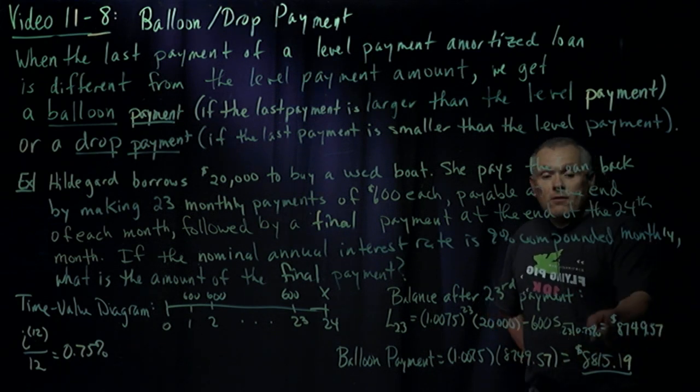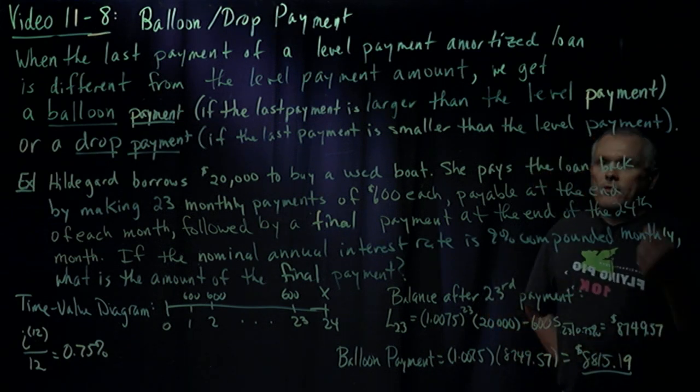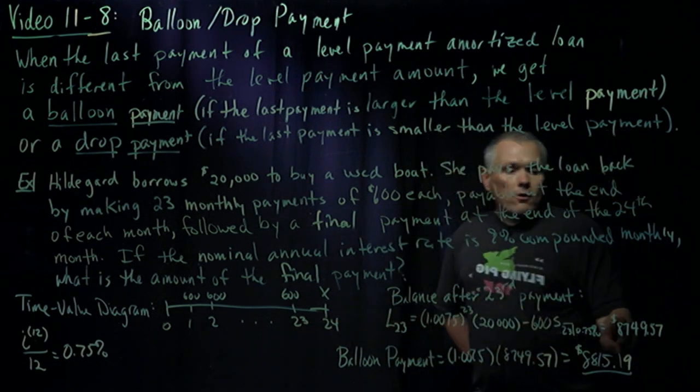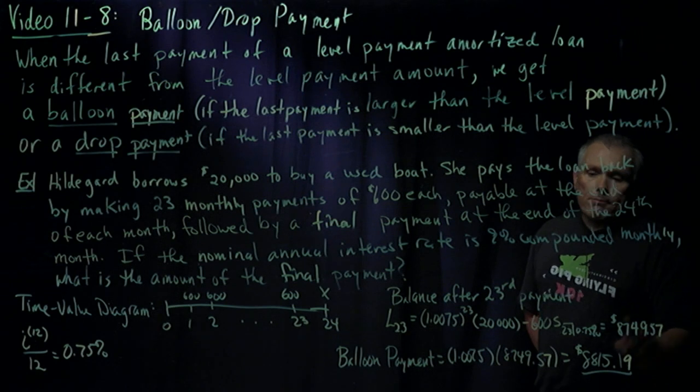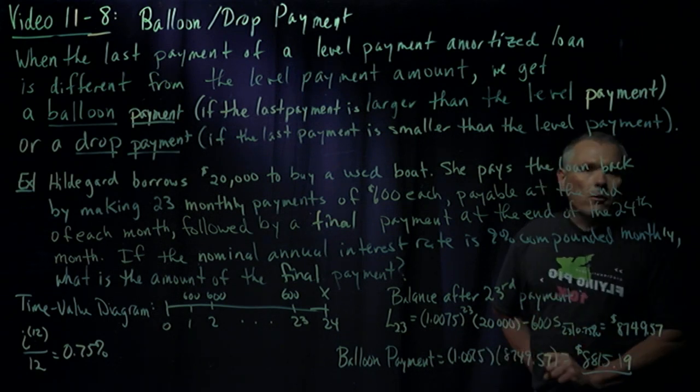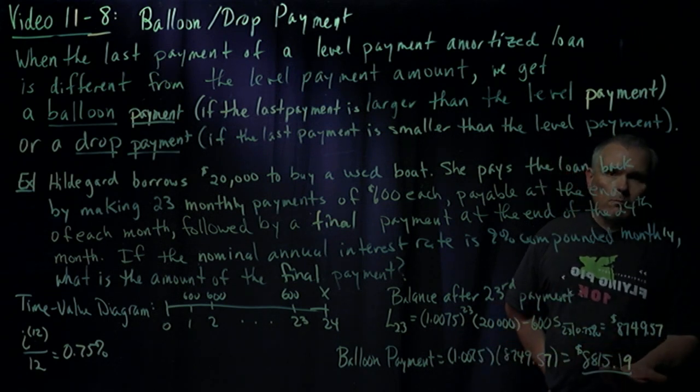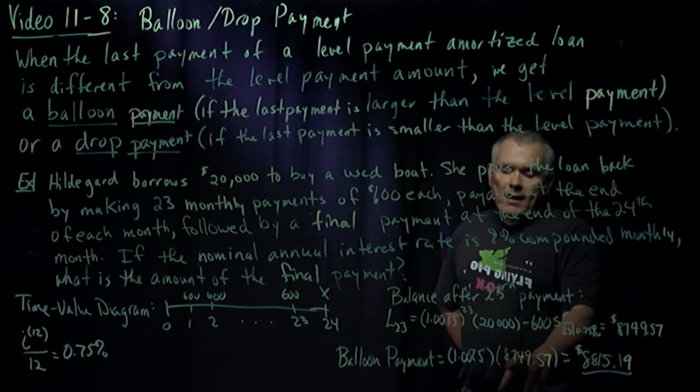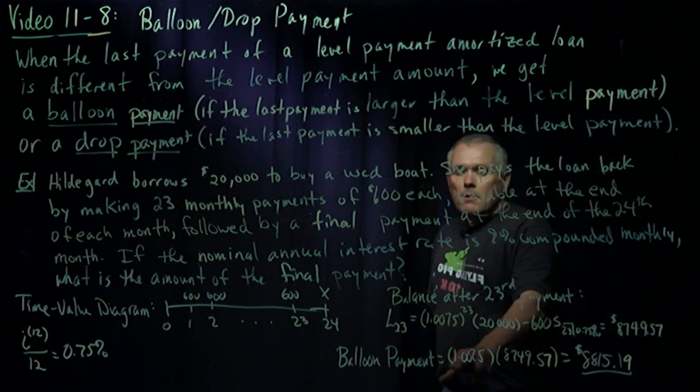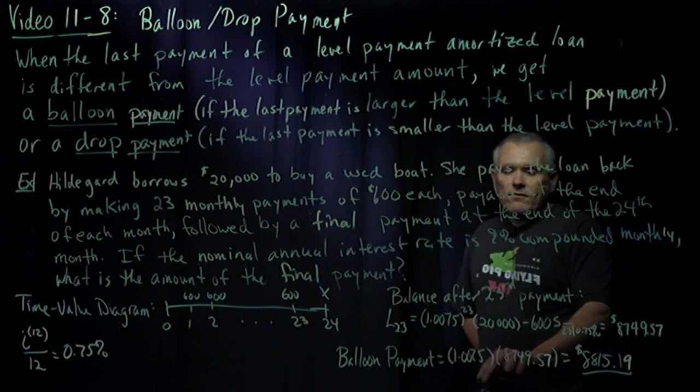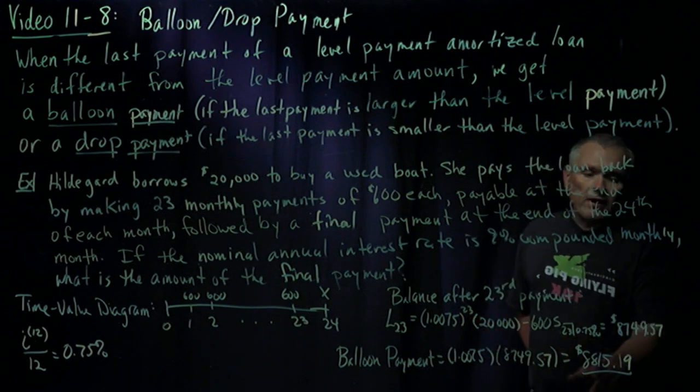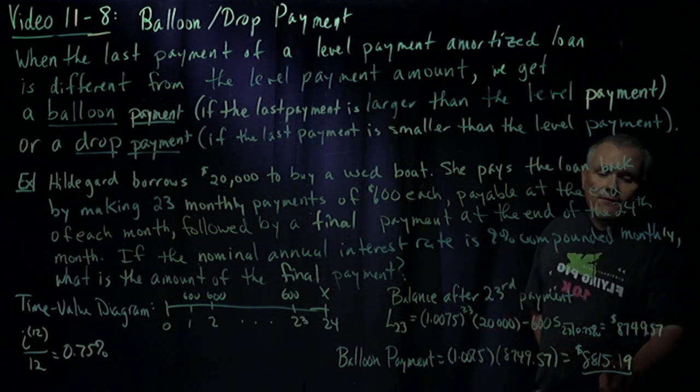Using our calculator, we can figure out that the balance at time 23 is $8,749.57. Now it's important to know that this is the balance at time 23. We're not going to pay this off until time 24, so we still have to move this balance one spot forward to figure out what the final balloon payment has to be. So we take that $8,749.57, multiply it by the 1.0075 to move it forward from time 23 to time 24 to get a final balloon payment of $8,815.19.